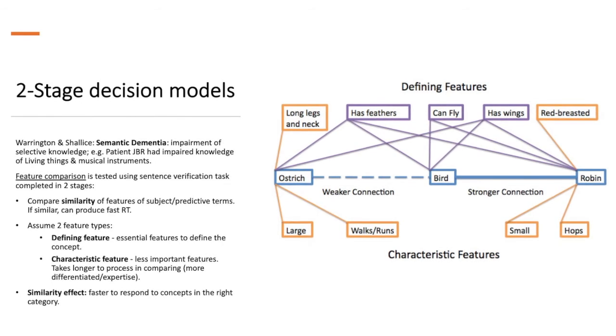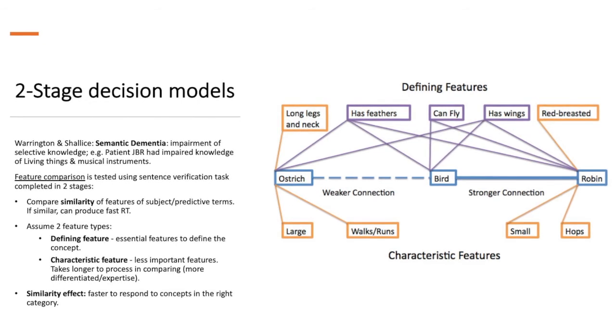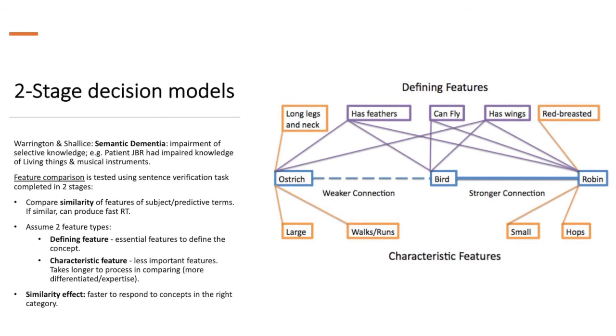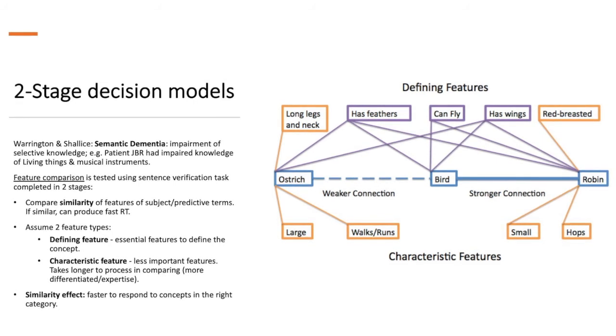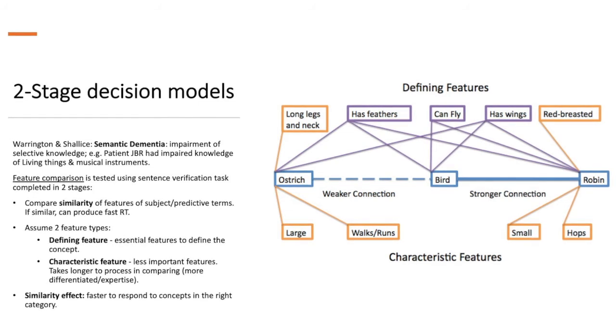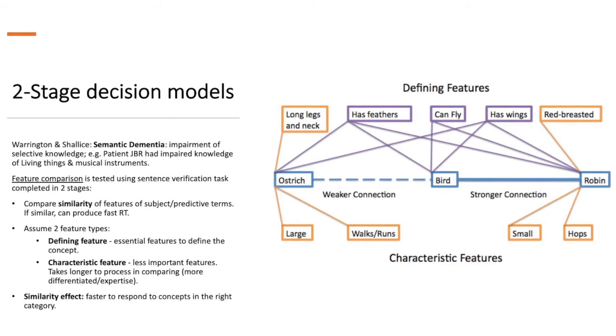and the defining features of birds are that they have feathers, they have wings, they can fly. But the characteristic features are only characteristic of certain birds. For example, robins, as opposed to ostriches, they have certain characteristics of being small, having red breasts, and certain size and shape.